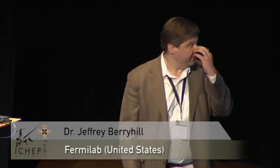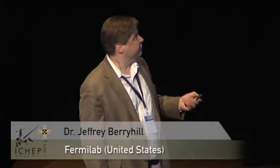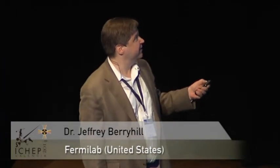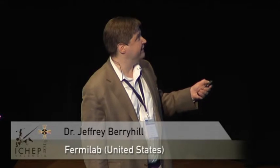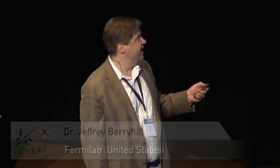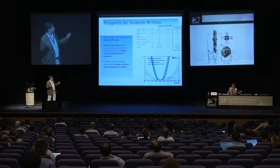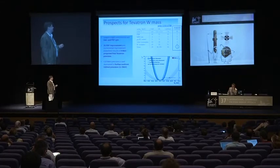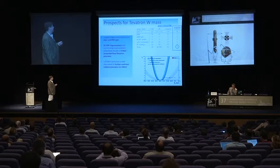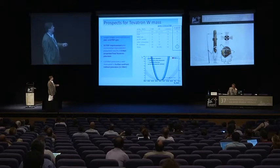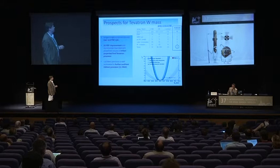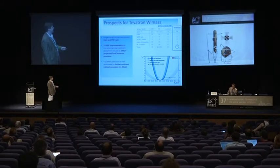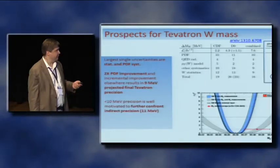Keep in mind that the indirect constraint is now 11 MeV, so we could try to do better. Looking at the error budget, the biggest contributions are statistical and PDFs, and the experiments haven't used all their statistics. With just a factor-of-2 improvement in PDFs — perhaps using their own experimental measurements — and incremental improvements elsewhere, they believe the final result can get all the way down to 9 MeV, which would be smaller than the indirect constraint and a worthy goal.